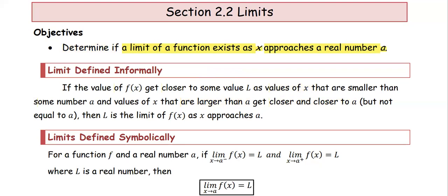Limit defined informally. If the value of f gets closer to some value L as values of x that are smaller than some number a, and values of x that are larger than a get closer and closer to a but not equal to a, then L is the limit of f(x) as x approaches a. In other words, as x approaches a from the left (x less than a) and from the right, y approaches the value L.